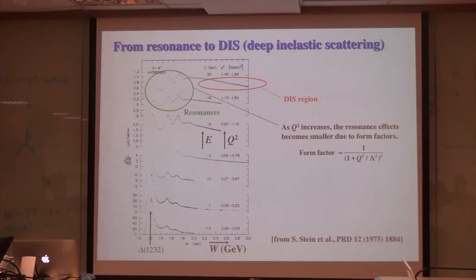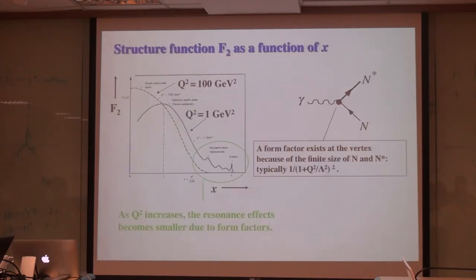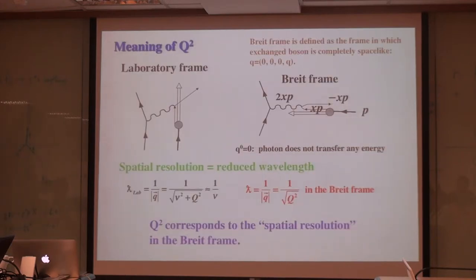However, as Q-square increases, these resonances decrease drastically due to the form factor, which is typically given by the dipole in this kind of form. These resonances become smaller in comparison with this region, which is called the DIS deep inelastic region, described by the parton model. This is another way of showing the similar data.